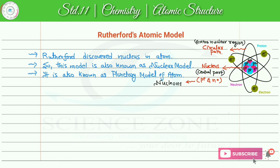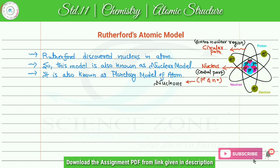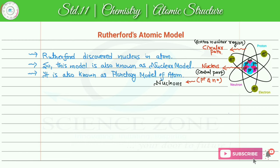In Rutherford's model, the nucleus exists in a very small region — the size of the nucleus is extremely small compared to the size of the whole atom. Rutherford gave the radius of the nucleus as approximately 10 raised to minus 15 meters. The nucleus contains protons, making it positively charged, and since protons and neutrons reside there, the mass of the atom is also concentrated in the nucleus.